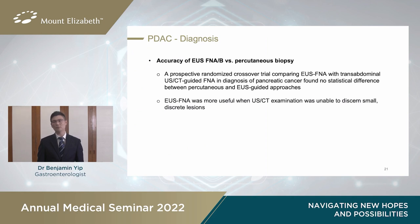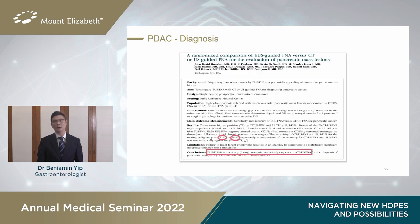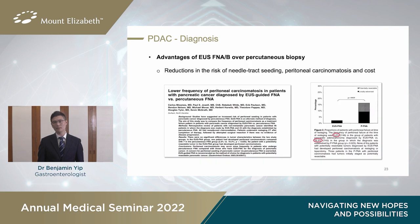What about EUS FNAB compared to percutaneous biopsy? In a prospective randomized trial comparing both approaches, there was no difference found, but EUS FNAB was found to be more useful when the lesions were smaller. Although numerically EUS was better, with a sensitivity greater than that of ultrasound and CT, unfortunately it was not statistically significant because the trial failed to reach its enrollment targets. The advantages of EUS over percutaneous biopsy include less risk of needle tract seeding and peritoneal carcinomatosis, and also reduced cost. In this retrospective review of 46 patients on each side, only 2% had peritoneal seeding with EUS, compared to more than 16% when done percutaneously.